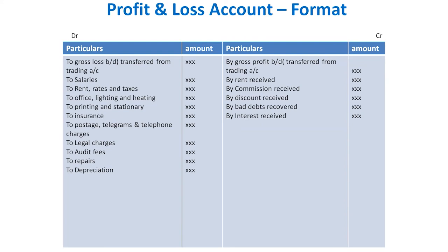All incomes or profits are entered on the credit side of the profit and loss account, along with the gross profit brought down. The first income is rent received — if you have received any rent from a let-out property, it acts as income and is credited. Next is commission received — commission paid is an expense whereas commission received is an income, so it is taken on the credit side.